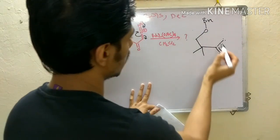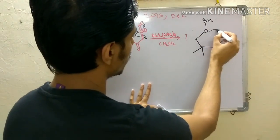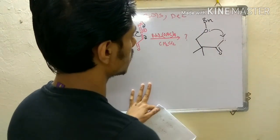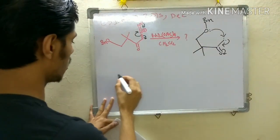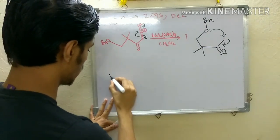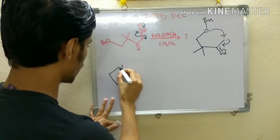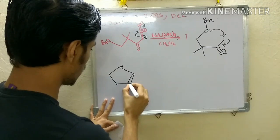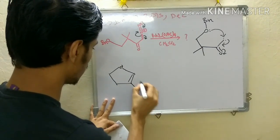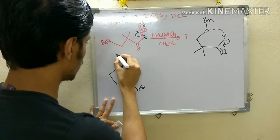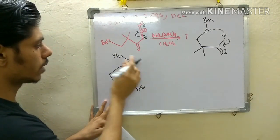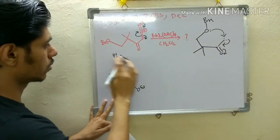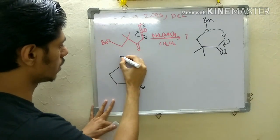Now see if this oxygen lone pair can participate as neighboring group there will be a five-membered ring and five-membered rings are excellent to form. So it can form a ring like this.